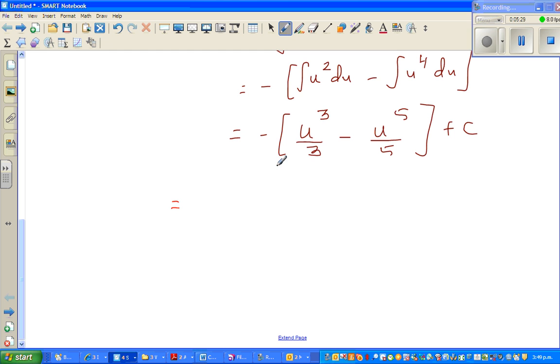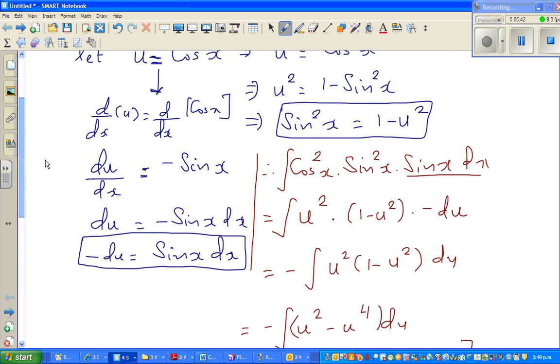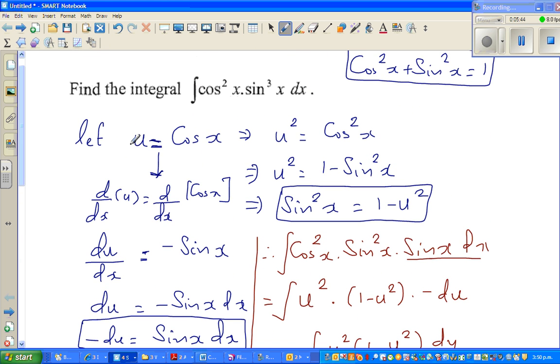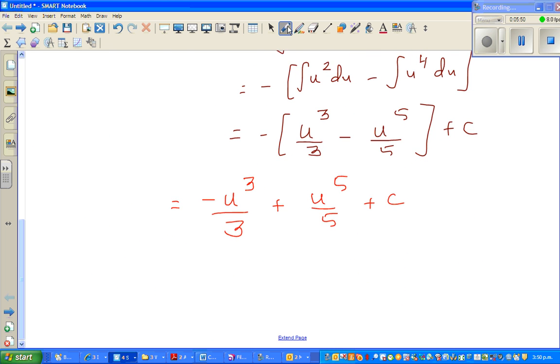So if you open the bracket, this is minus u cubed over 3 plus u to the power 5 over 5 plus c. But we have to get back to the original form. Our original form was in x. So u equals cos x. We have to put that back.